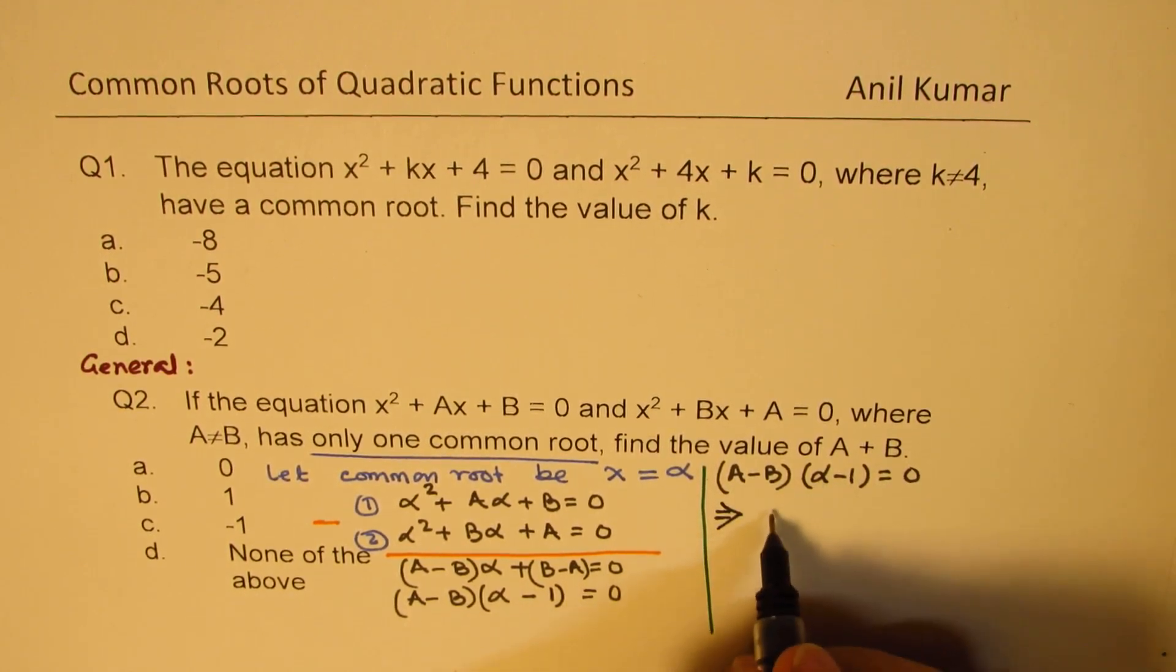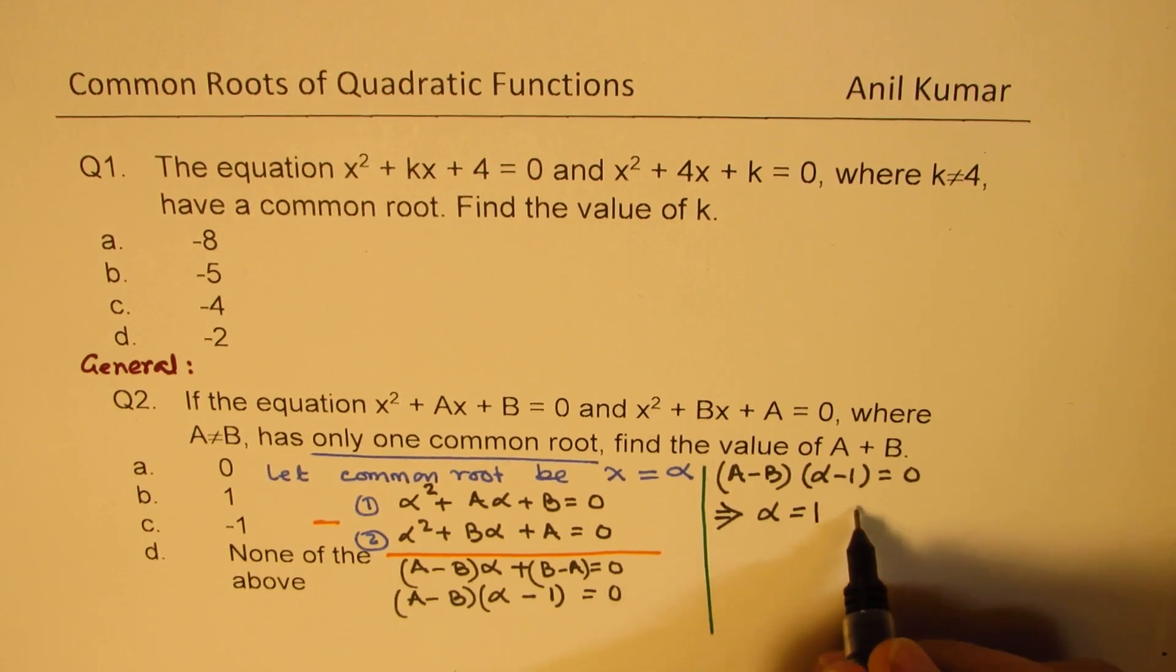We are saying that (a - b)(α - 1) = 0. Now that clearly implies that α = 1 since a is not equal to b, right?